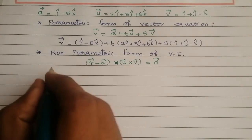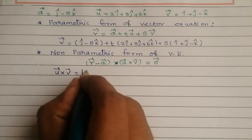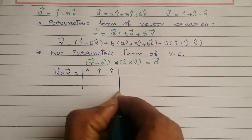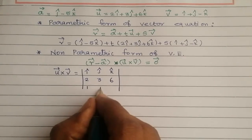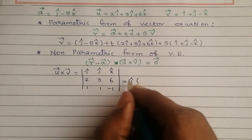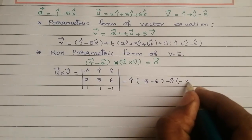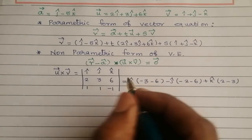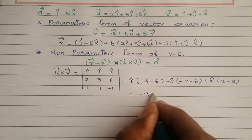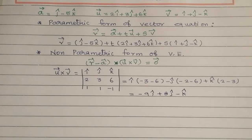First, we compute u vector cross v vector. It is defined by the determinant of i cap, j cap, k cap with rows (2, 3, 6) and (1, 1, -1). That gives i cap(−3 − 6) minus j cap(−2 − 6) plus k cap(2 − 3), which equals minus 9i cap plus 8j cap minus k cap.